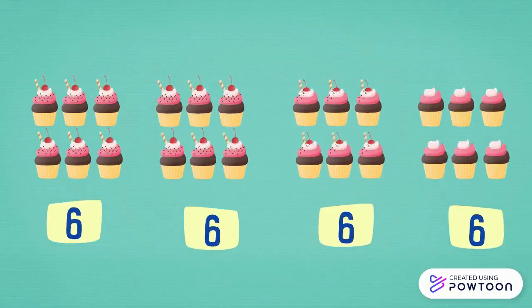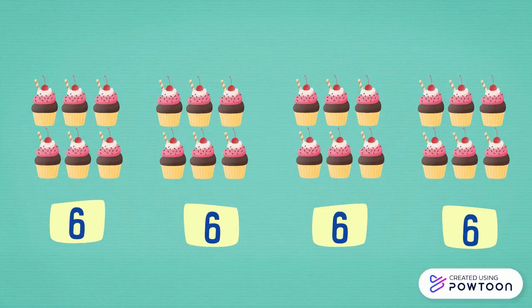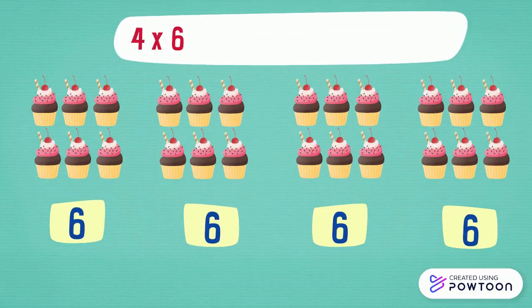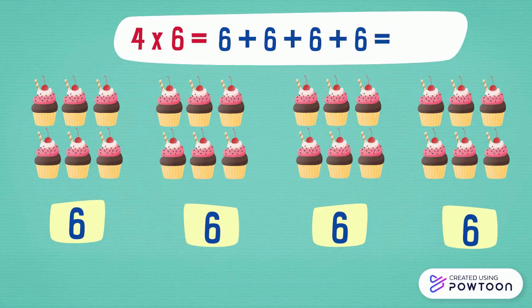We have 4 groups of 6 cupcakes. So the total number of cupcakes is 4 times 6, which equals 6 plus 6 plus 6 plus 6, which equals 24. So 4 times 6 equals 24.